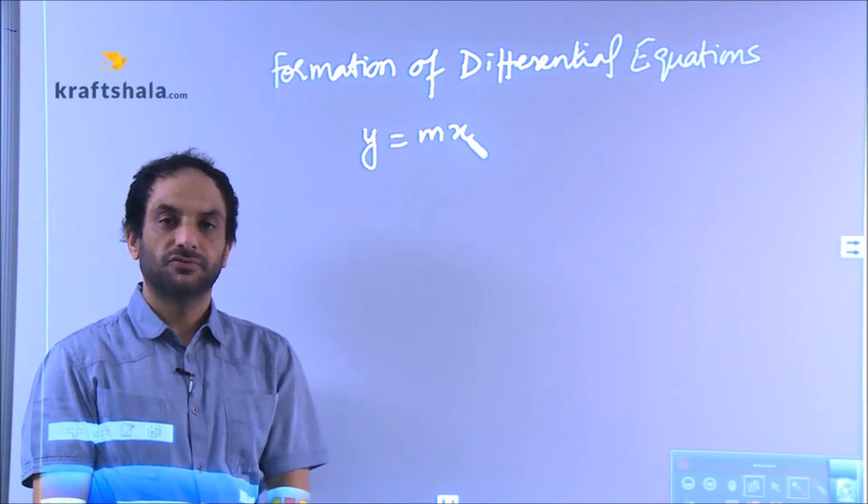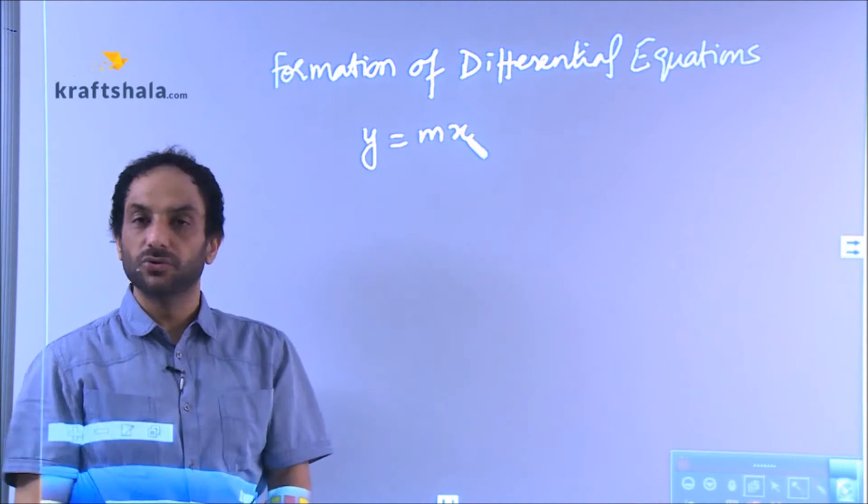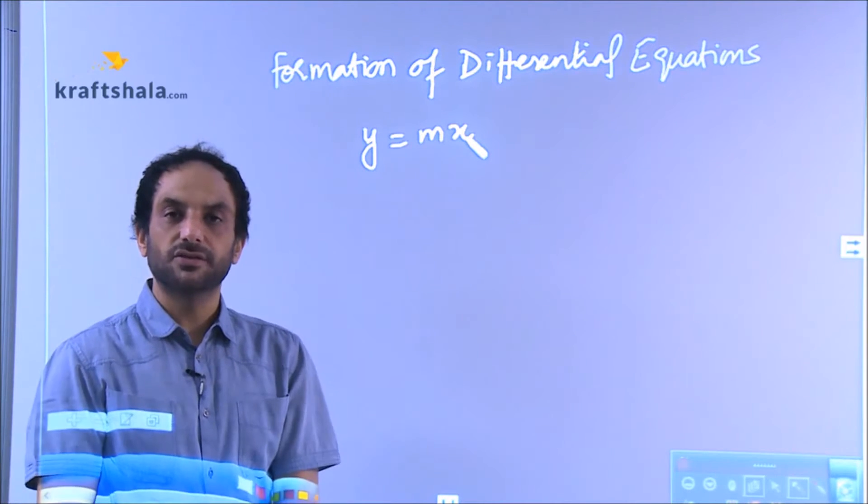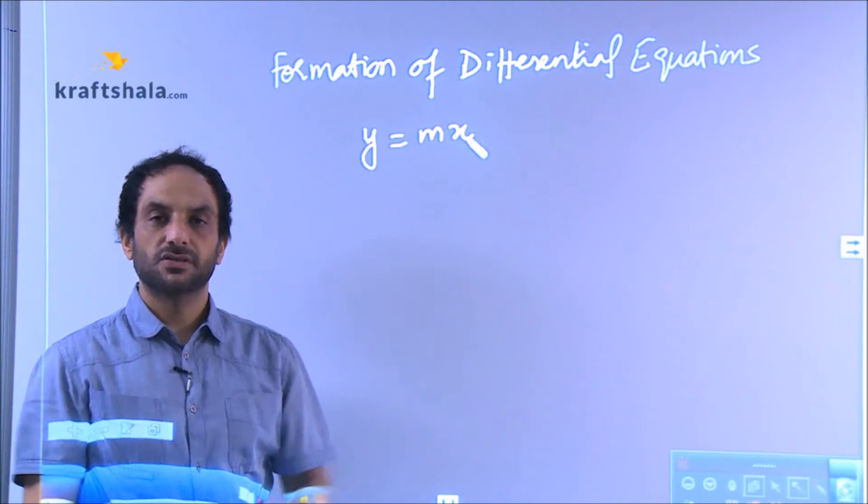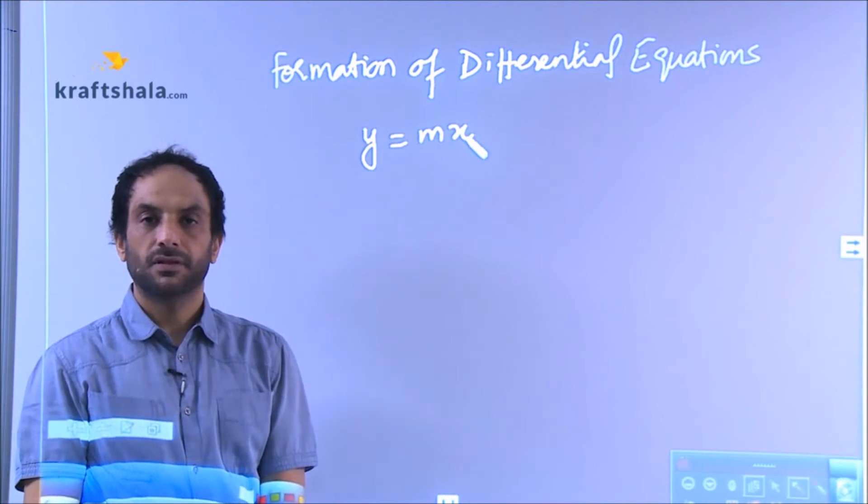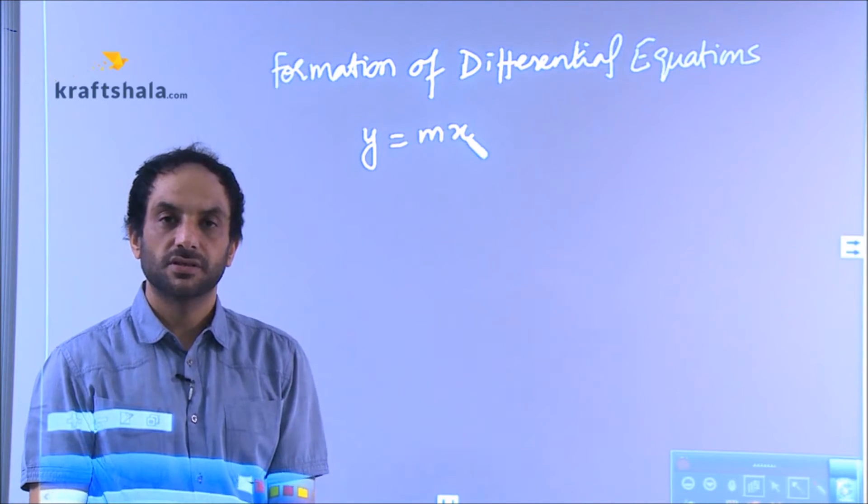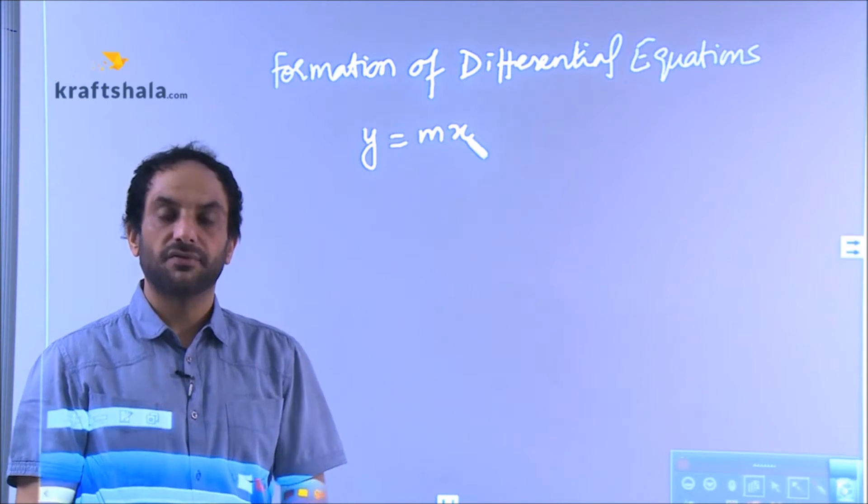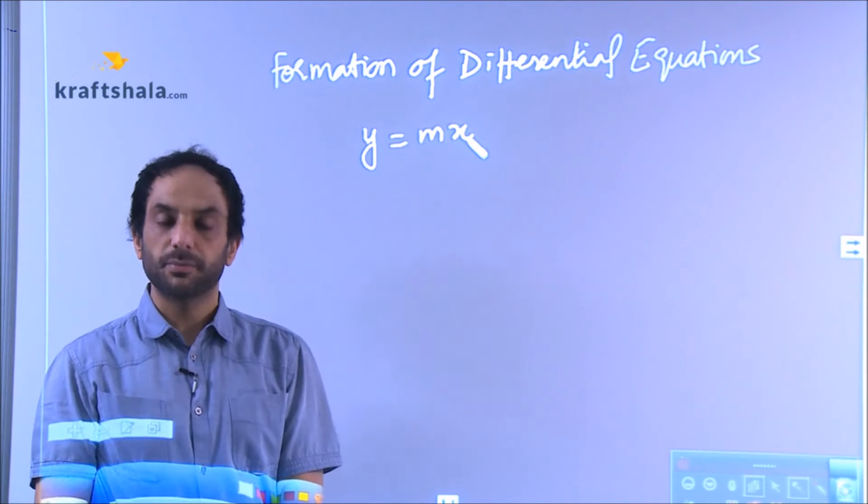For me, M can be 2. For you, M can be root 3. For your friend, it could be minus 1 by 7. So we call M an arbitrary constant. So in differential equation, our target is to remove the arbitrary constant.